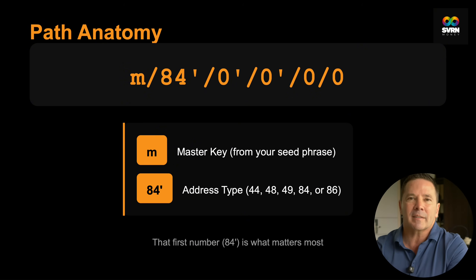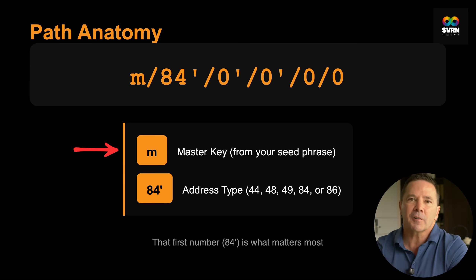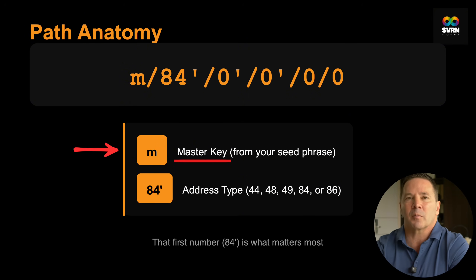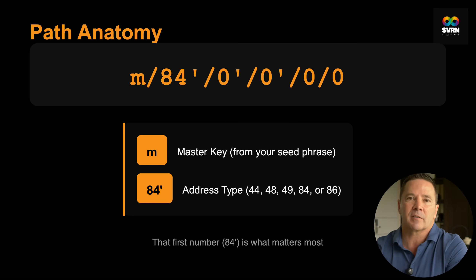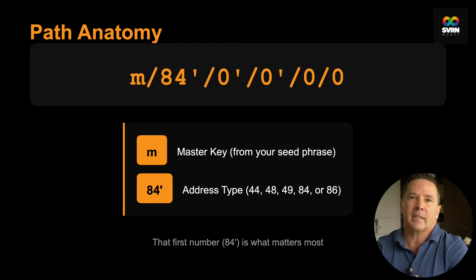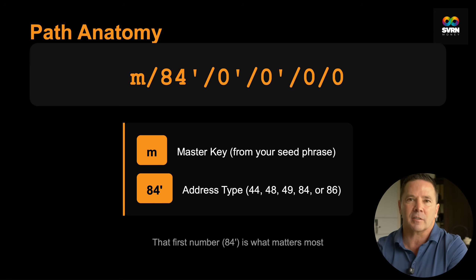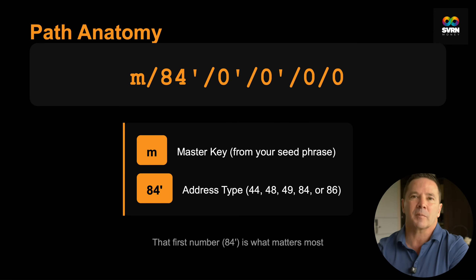So let's break down the derivation path step by step. The first part is the M, and it stands for master or master key. That's the master private key generated from your seed phrase that controls the whole wallet. Each number after that is turn-by-turn directions to a specific apartment where your Bitcoin is stored.